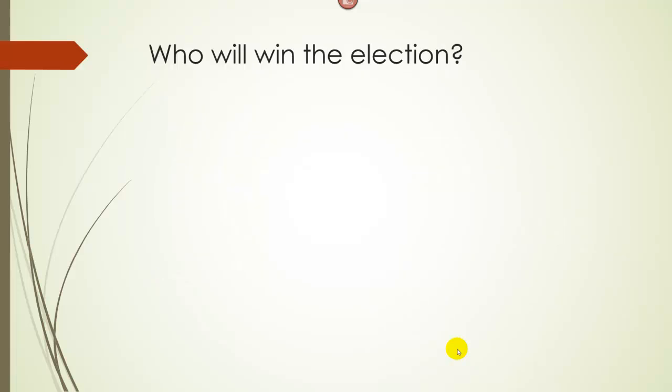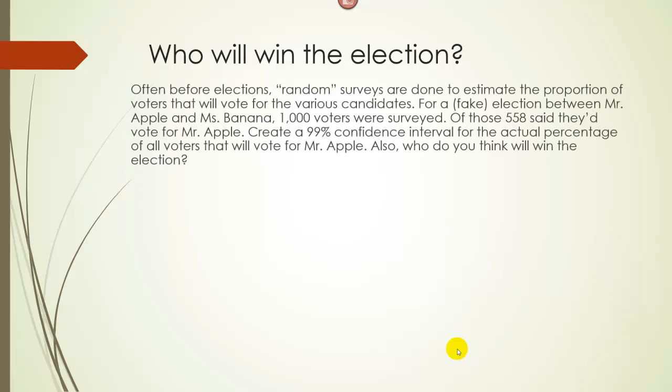Let's do another fake example about who will win an election. Often before elections, random samples are done to estimate the proportion of voters that will vote for various candidates. Let's assume we did a proper random sample. For a fake election between Mr. Apple and Ms. Banana, 1,000 voters were surveyed, and 558 said they'd vote for Mr. Apple. Let's create a 99% confidence interval for the actual percentage of all voters that will vote for Mr. Apple. Who do you think will win the election?